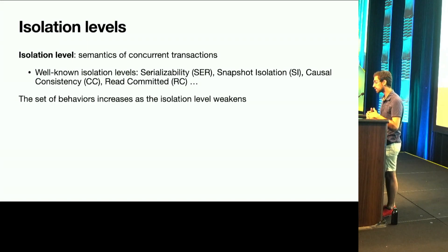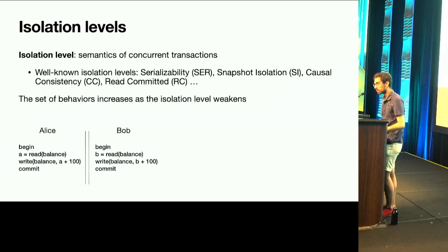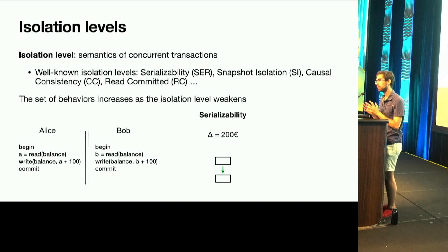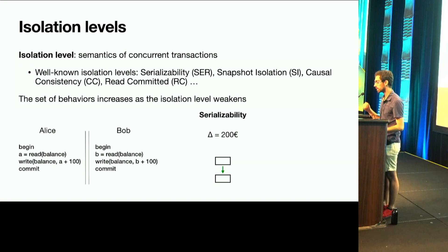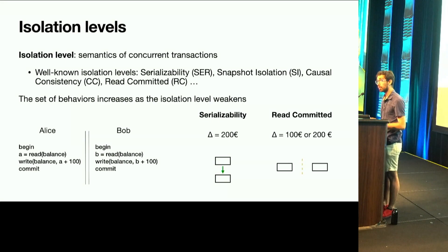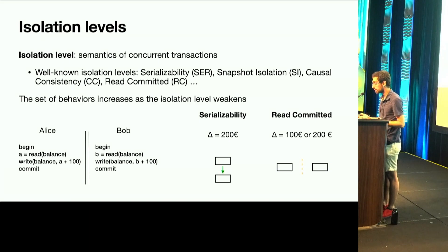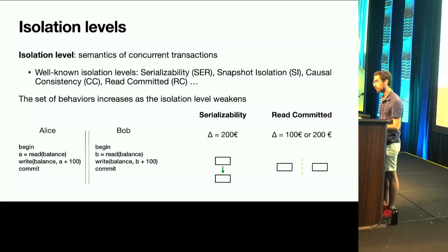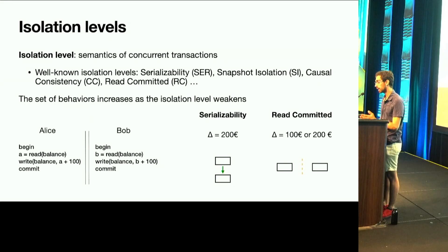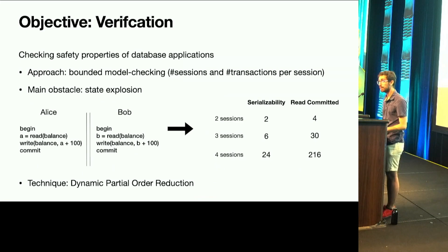For example, taking Alice and Bob, this program can run on top of serializability, where transactions run as if there were no concurrency. We execute one transaction, then the next, and at the end Claire receives 200 euros. Another possibility is that this program runs under read committed, where both Alice and Bob read from the initial state — written as 0 euros — then both write 100, and when Claire checks how much money she receives, she will only see 100 instead of 200.